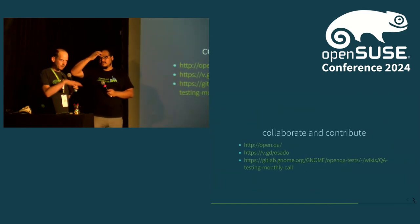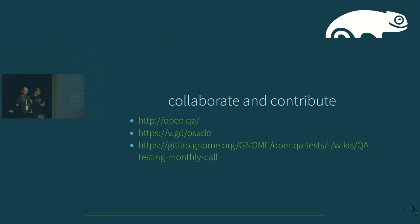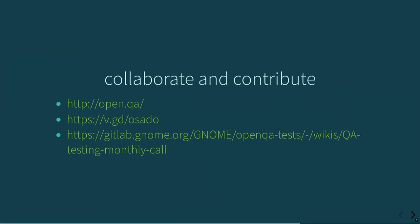Going forward with the collaboration and contribution, just some pages to shout out. We have open.qa as the central page for OpenQA. Then we have OSADO, which is the test distribution — the main OpenSUSE and SLES test distribution — and this link points to the contribution guide. So if you want to help, follow that link directly. And the third one is the monthly QE testing call that we have organized by the folks contributing to GNOME, and we're all involved.